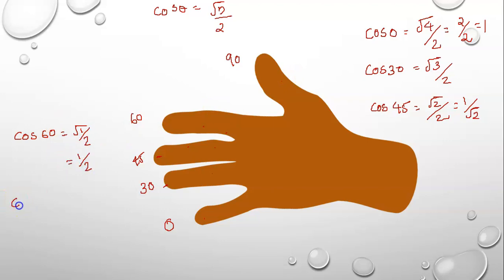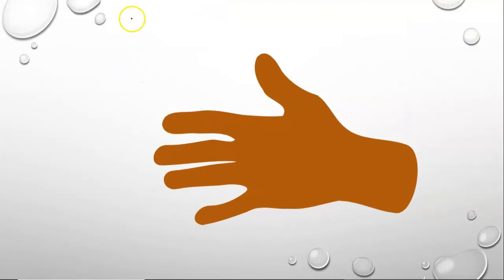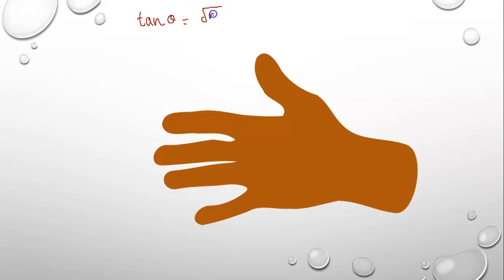Cos 90 is equal to 0. Below finger and above finger.